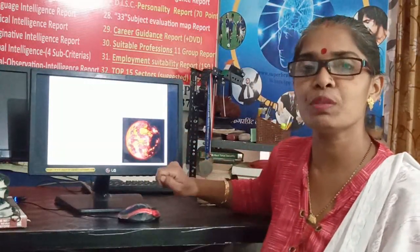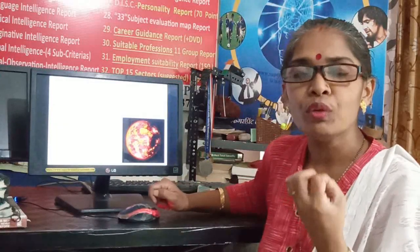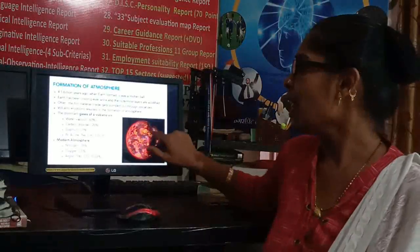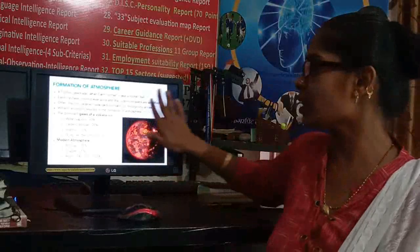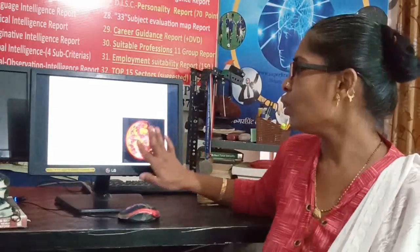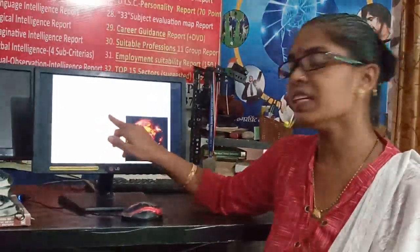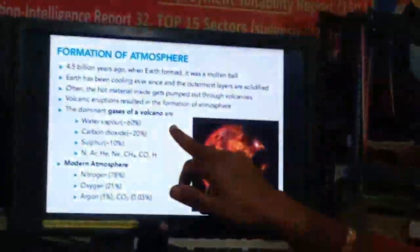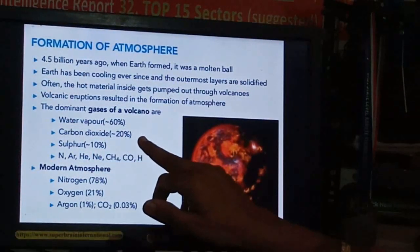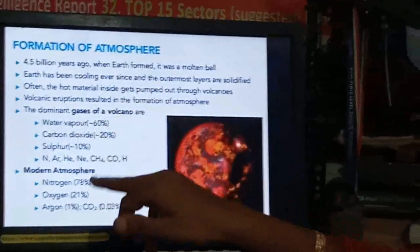That time, Earth was formed 4.5 billion years ago, and it was a very hot molten ball-like structure. As it revolved and rotated, it slowly cooled, and the outermost structure got a little bit solidified. Inside, it is still liquid. Even today, we experience hot liquid bursting outside in the form of volcanoes.